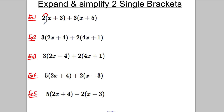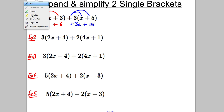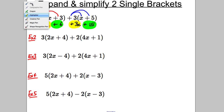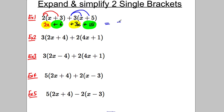2 multiplied by x is 2x. 2 multiplied by positive 3 is positive 6. Positive 3 multiplied by x is positive 3x. And positive 3 multiplied by positive 5 is positive 15. Then you collect like terms: positive 2x and positive 3x; positive 6 and positive 15. So in total you've got 5x, and positive 6 and positive 15 is positive 21. And you're done.